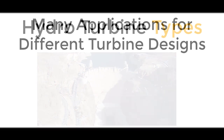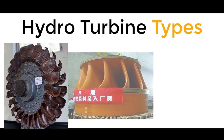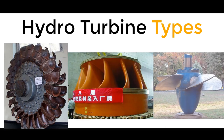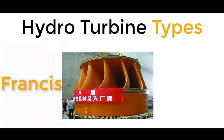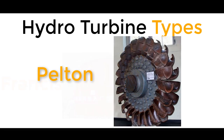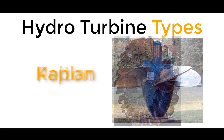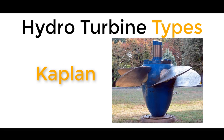The three main types of turbine you're likely to see are the Pelton turbine, the Francis turbine, and the Kaplan turbine. The Francis turbine is the most common, designed in the mid-1800s by James B. Francis. The Pelton turbine was also designed in the mid-1800s by Lester Pelton and has by far the most distinctive appearance of all the turbines. The Kaplan turbine was designed by Victor Kaplan at the start of the 1900s and looks more or less like a propeller.